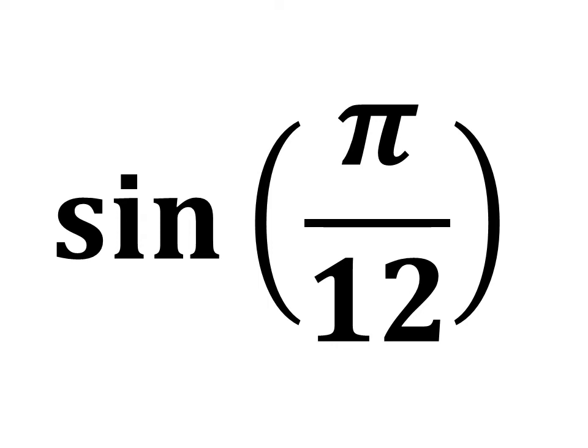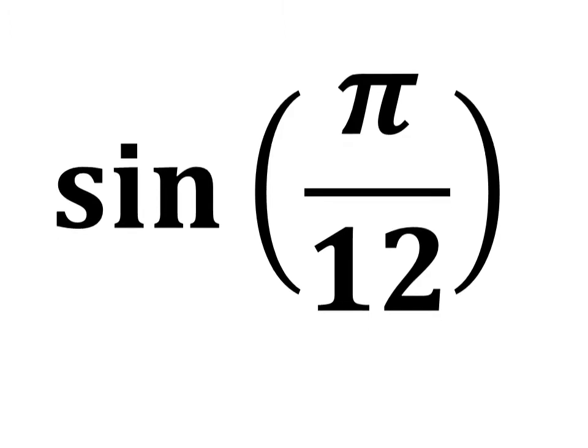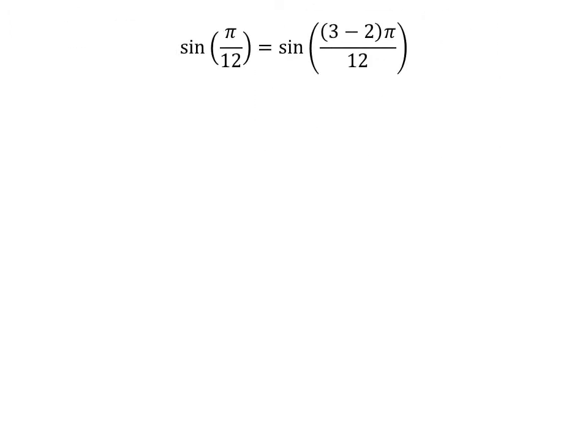In this video, we will learn to find the value of sine of pi upon 12. We know 3 minus 2 is equal to 1. So, sine of pi upon 12 is equal to sine of 3 minus 2 times pi upon 12.